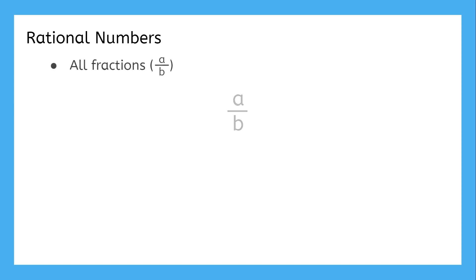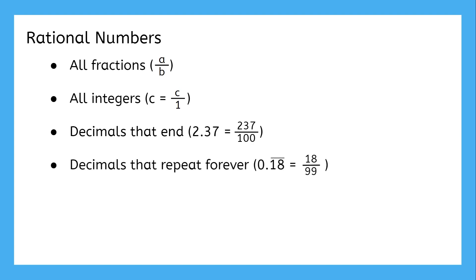This includes all fractions, obviously. All integers, because they can be turned into a fraction by just using a denominator of 1. All decimals that end, because you can remove the decimal point and set the result over a multiple of 10. And all repeating decimals, because there's always a way to turn them into a ratio.